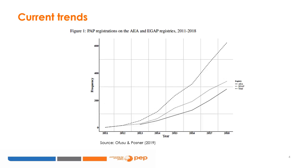This graph is meant to show that pre-analysis plans, or PAPs, are becoming increasingly popular, with rapidly increasing trends in usage in the last decade.